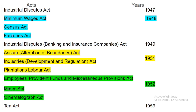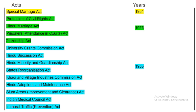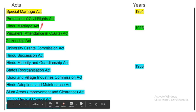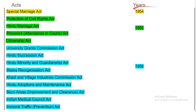Tea Act was passed in 1953. Special Marriage Act was passed in 1954. Protection of Child Rights Act, Hindu Marriage Act, Prisoners Attendance in Court Act and Citizenship Act — these four acts passed in 1955.